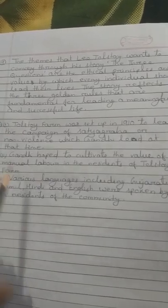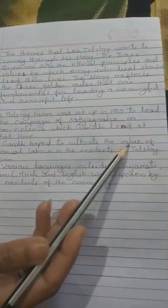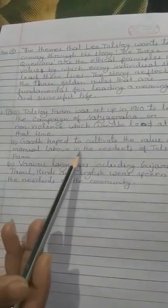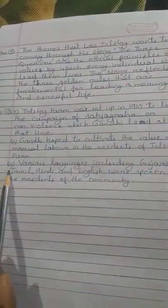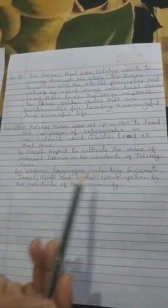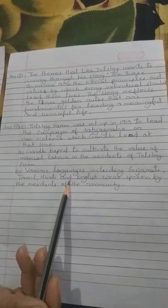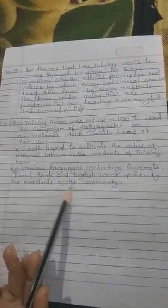Point number 2, Gandhi hoped to cultivate the value of manual labor in the residents of Tolstoy farm. Third point, various languages including Gujarati, Tamil, Hindi and English were spoken by the residents of the community.